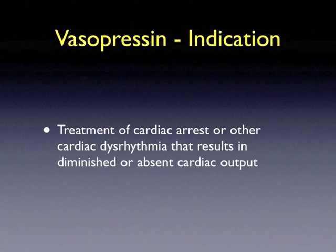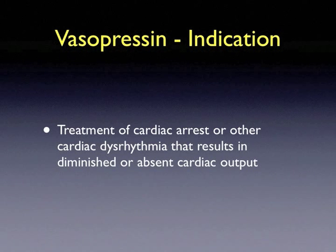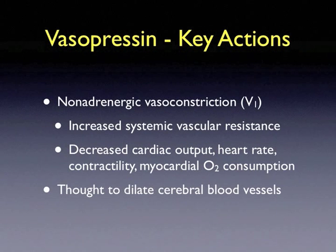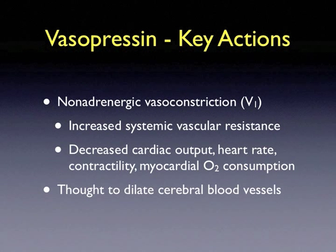Let's talk about vasopressin. Its indication is exactly the same as epinephrine's — to treat cardiac arrest or other cardiac dysrhythmia that results in diminished or absent cardiac output. Vasopressin is a non-adrenergic vasoconstrictor. It works at the V1 receptor, which increases systemic vascular resistance. It also decreases cardiac output, heart rate, contractility, and myocardial oxygen consumption. Vasopressin is also thought to dilate cerebral blood vessels.